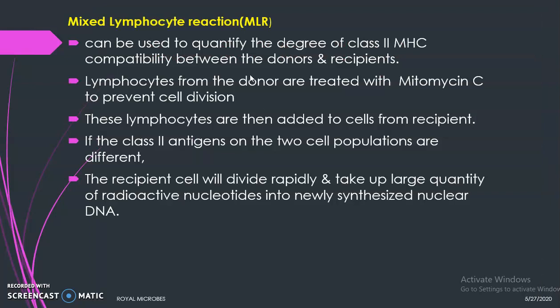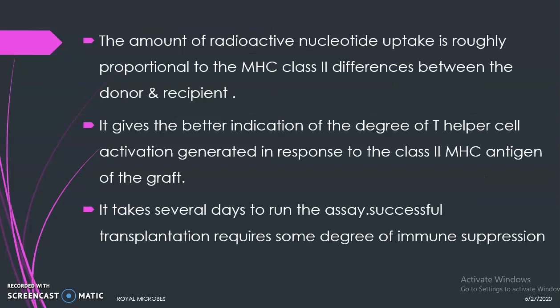Another test is the mixed leukocyte reaction (MLR), which is used for quantifying the degree of class 2 MHC compatibility between donors and recipients, since class 2 MHC molecules are highly important for activating the T helper cell response. Lymphocytes from the donors are treated with mitomycin C to prevent their cell division, then added to cells from the recipients. If the class 2 antigens on the two cell populations are different, the recipient cells start proliferating and take up large quantities of radioactive nucleotides into newly synthesized nuclear DNA. The amount of radioactive nucleotide uptake is roughly proportional to the MHC class 2 differences between donor and recipient.